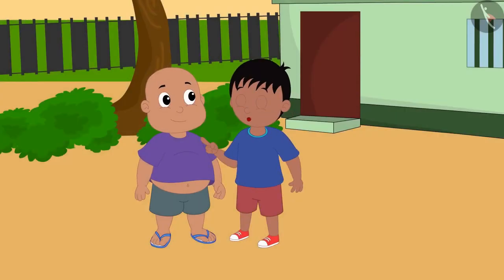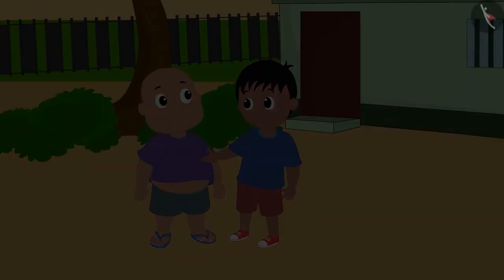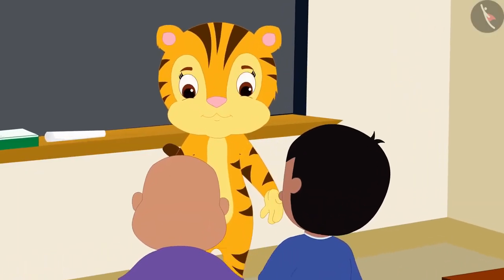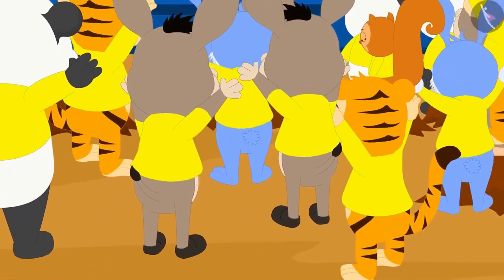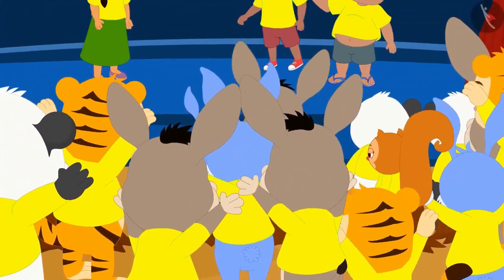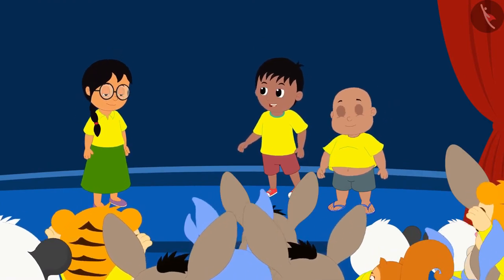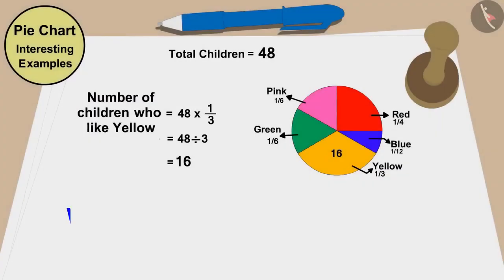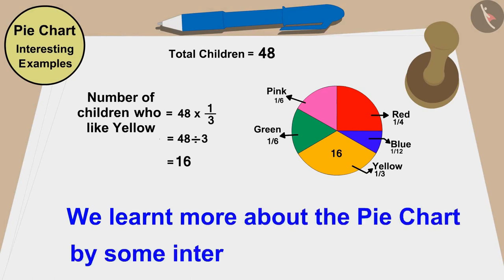Bablu, let's quickly tell Mrs. Khan that most of the children like yellow color. Raju and Bablu conveyed this to Mrs. Khan and then all the children celebrated the annual festival with great enthusiasm by wearing yellow shirts. Children, in this video we learned more about the pie chart through some interesting examples. In the next video, we will see some common mistakes related to this.